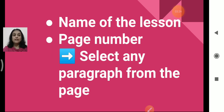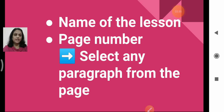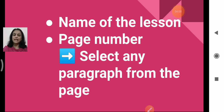Then you will start with the name of the lesson. The lesson is number 5, The Magic Wrap. So you will first read the name of the lesson — lesson number 5, The Magic Wrap. Then you will also mention the page number, because the lesson is big enough. From that page number you can select any paragraph — it is up to you. You have to select any paragraph and start reading.